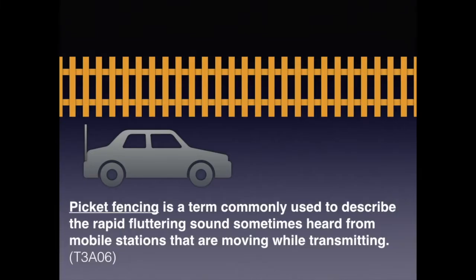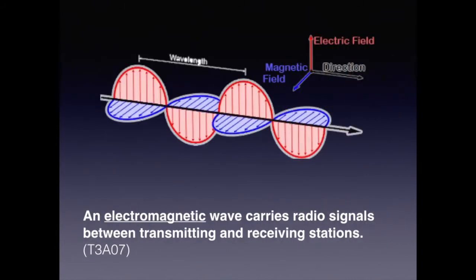Picket fencing is a term commonly used to describe the rapid fluttering sound sometimes heard from mobile stations that are moving while transmitting. Radio waves are really electromagnetic waves — there is an electric field component as well as a magnetic field. The two are in phase but the radiation polarities are different. For the exam, understand that an electromagnetic wave carries radio signals between transmitting and receiving stations.